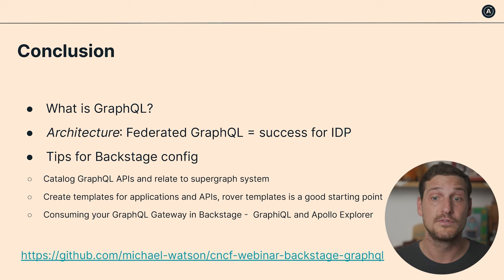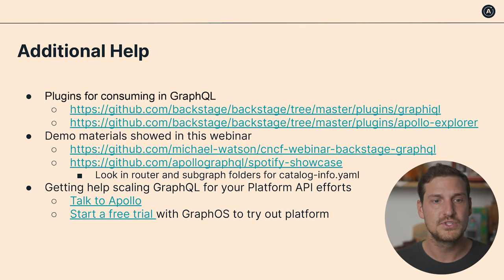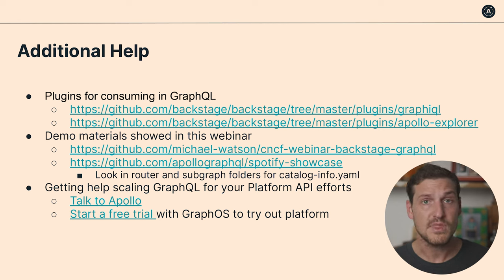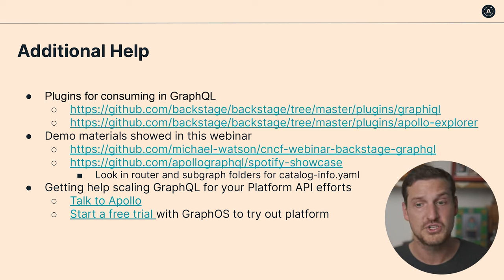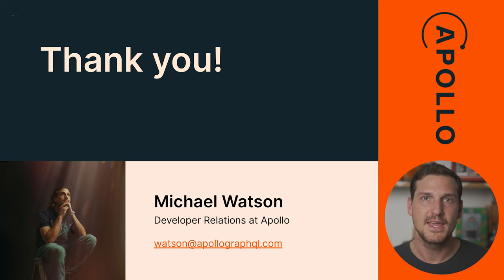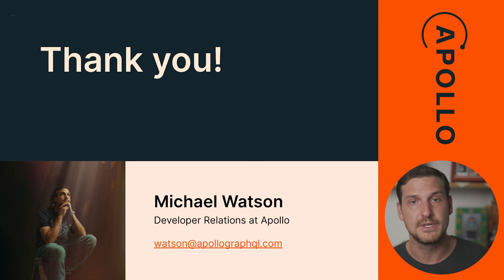If you want to check out the code for the Backstage instance I was showing, you can find it in that repo. I collected all the links and resources we went through today on this slide. If you want to talk to Apollo about scaling out your GraphQL and platform API efforts, this link can get you in touch with our team. I also added a link to a free trial if you want to try out our managed schema registry without talking to anyone. You can connect it to the Spotify showcase demo if you want to fork that project. Thank you so much for taking the time to watch this webinar — I hope you found it helpful. Feel free to reach out if you have any questions. Have a great day.